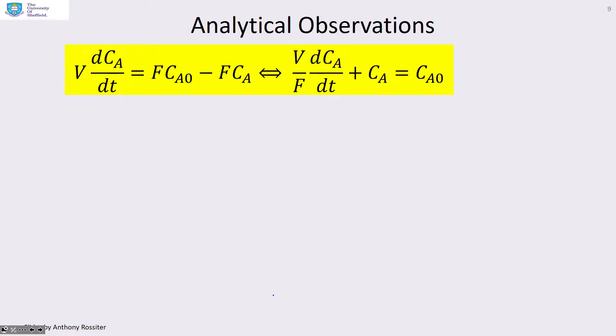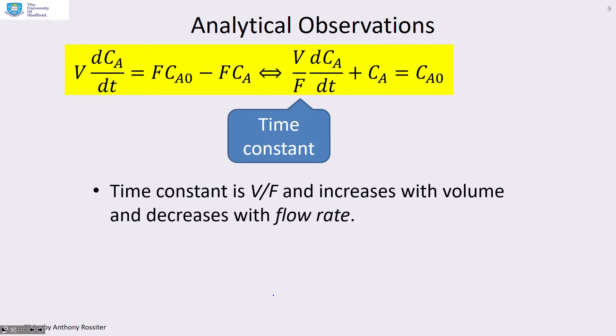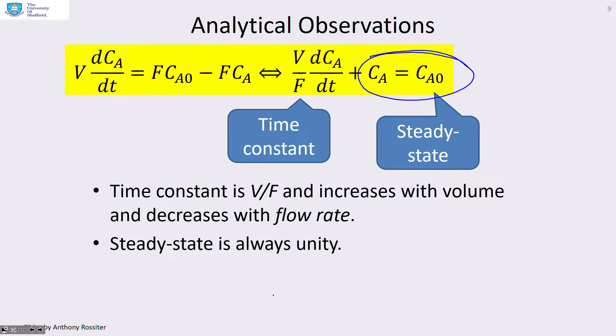Some analytical observations. What have we noticed? The time constant is given as V over F. So it gets slower if you increase the volume and faster if you increase the flow rate. And that's what we noticed when we use this MATLAB app. The steady state gain is always unity. So the steady state value for CA always matched CA0. And that's what you can see when the derivative goes to zero with CA equals CA0.